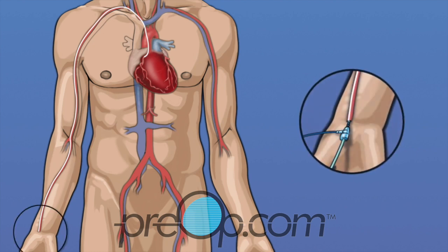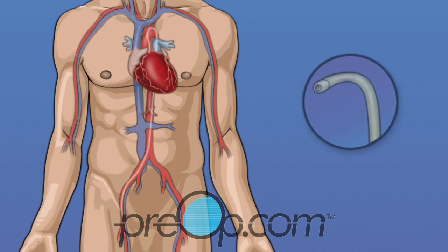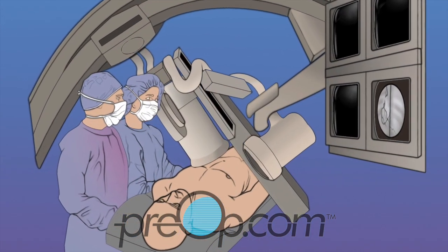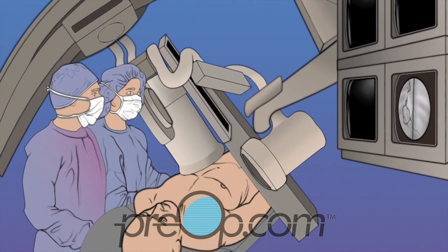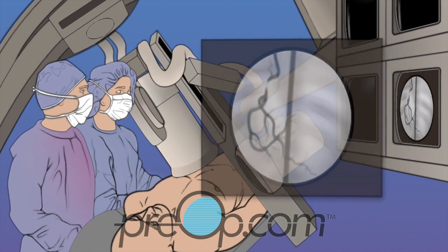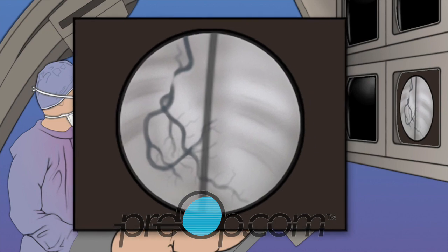The catheter is inserted at the wrist, then guided to reach the heart. Which artery is selected depends on your personal situation and the experience and training of your cardiologist. A contrast dye that can be seen with an x-ray machine is given. X-ray pictures and video of the dye show the cardiologist how blood is moving through your heart.